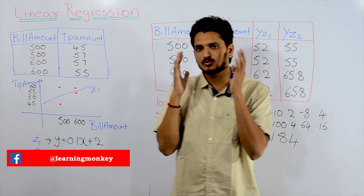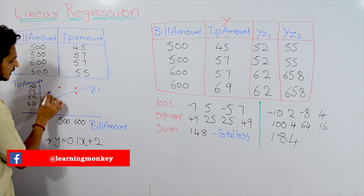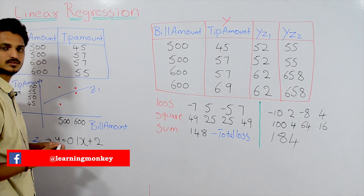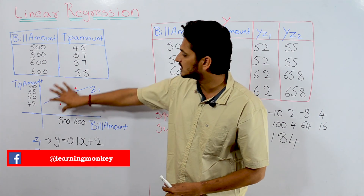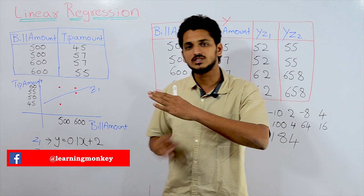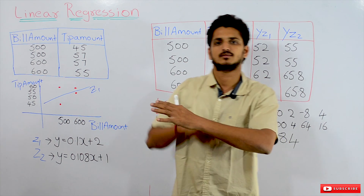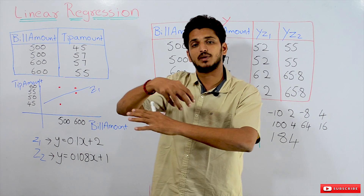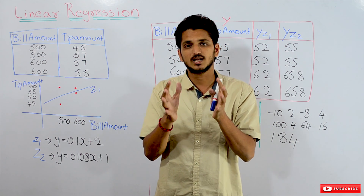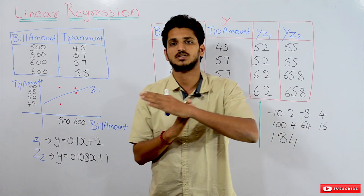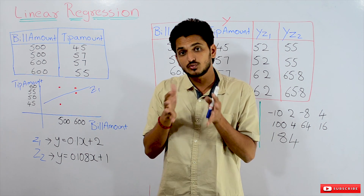The next question in your mind is: why this line? Why Z1? From the data, thousands of lines pass through. One line will be like this, another like that. Why did we choose Z1 and not other lines? From these thousands of lines, there will be only one line which is the best line. How do we identify this best line? We have to pick the best line.